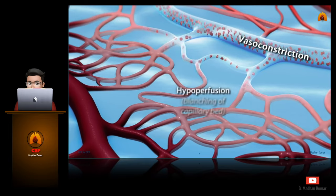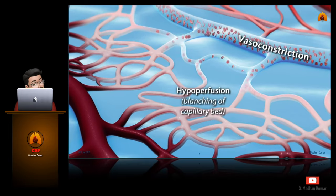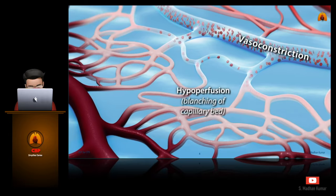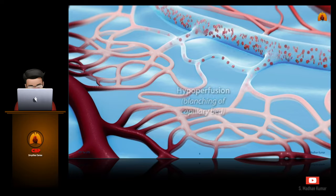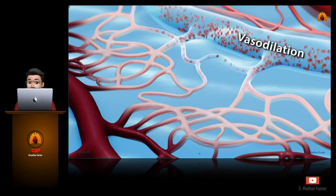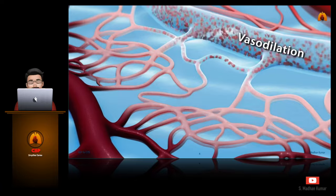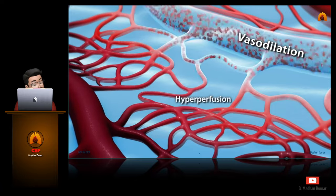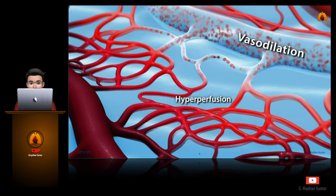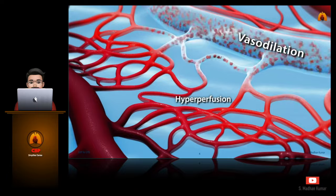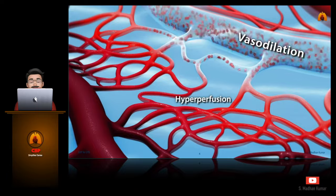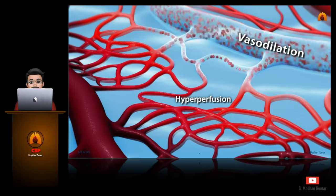During the vasoconstricted phase, you can see the circulation is getting compromised, leading to tissue hypoxia and ischemia, which will eventually lead to anaerobic metabolism and organ damage. During the vasodilated phase, you can see microcirculation is very much improved and good tissue perfusion is achieved.